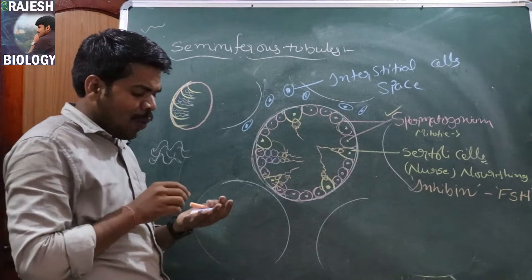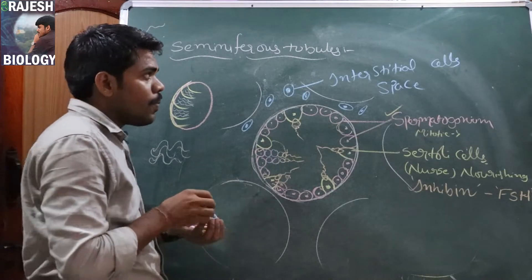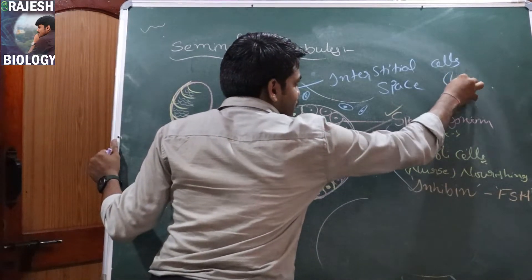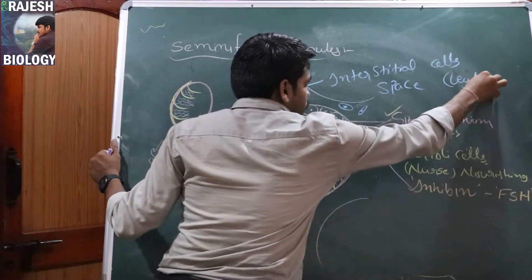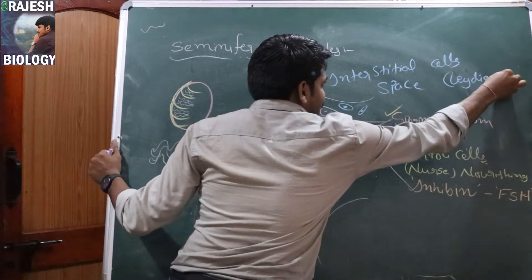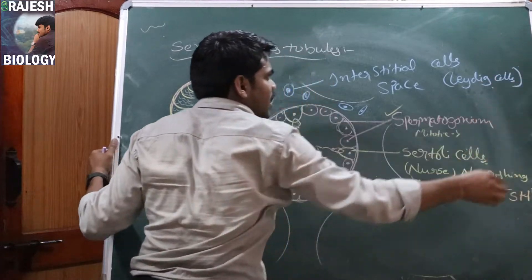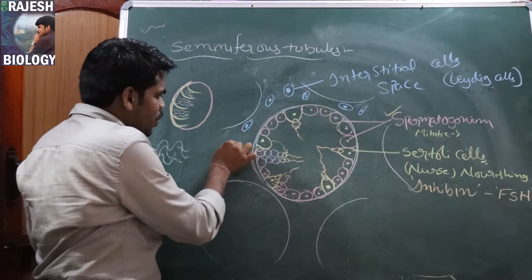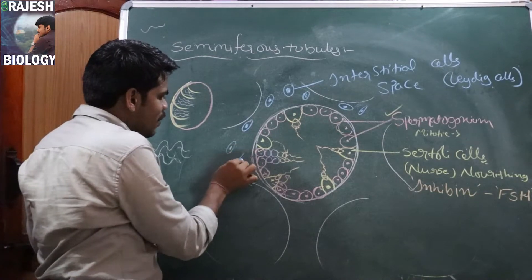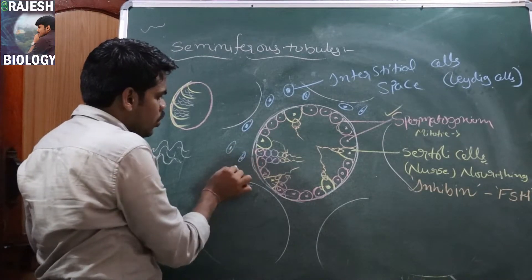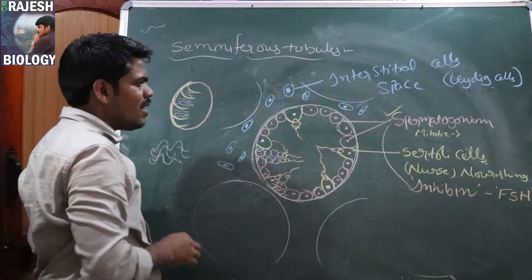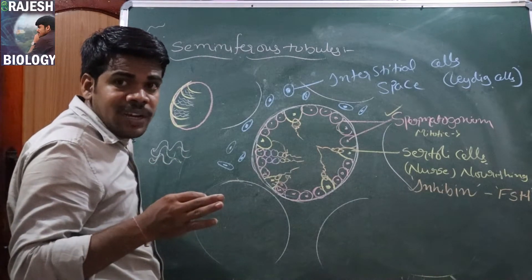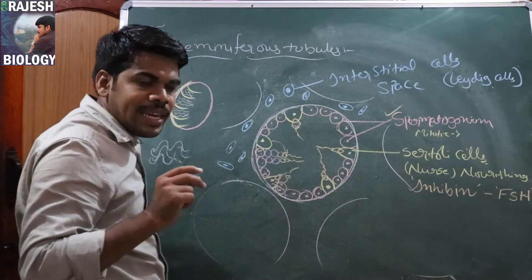Interstitial cells have another name — they are also called Leydig cells. Leydig cells are present in between the seminiferous tubules. What is the function of Leydig cells? They play a very crucial role in developing secondary sexual characters.